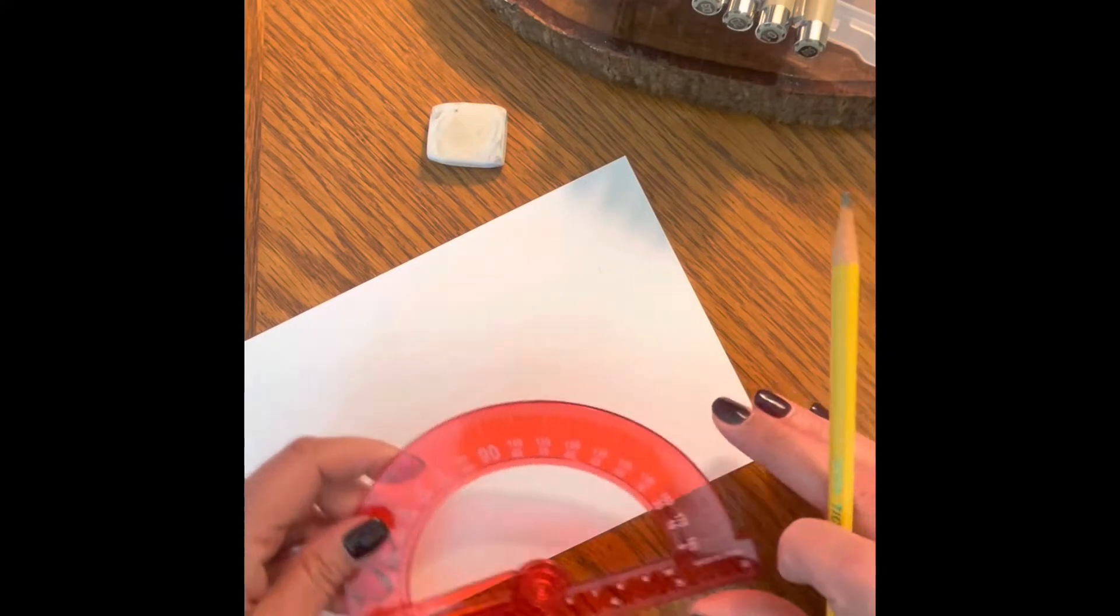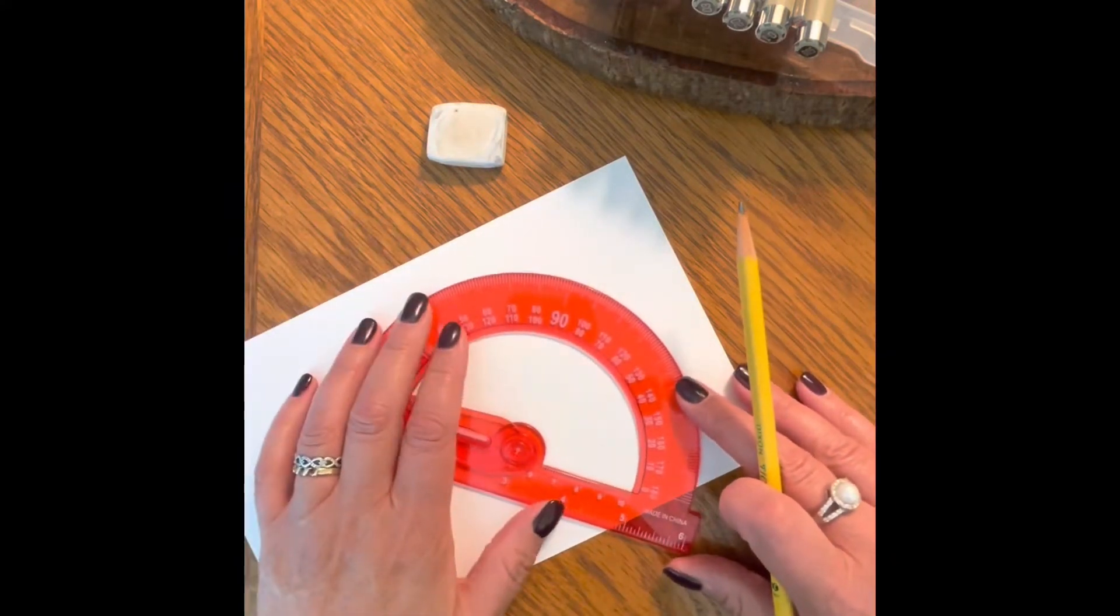I've marked off my paper, basically showing me where two and a half inches by three and a half inches is. So this way, when I'm putting down my design, I know that I'm covering the space that I'm going to be using for my card.